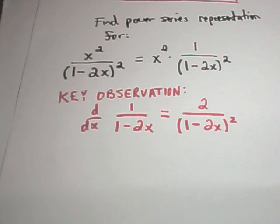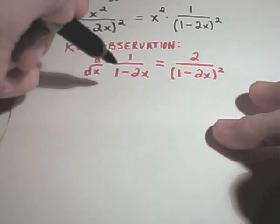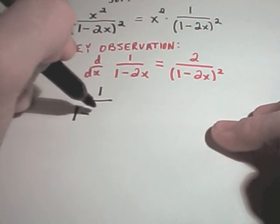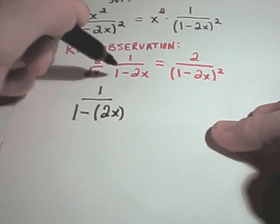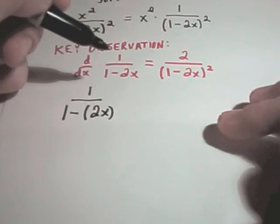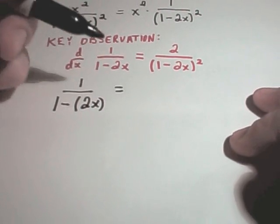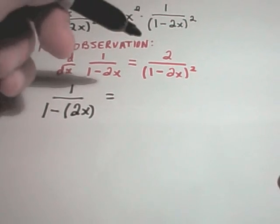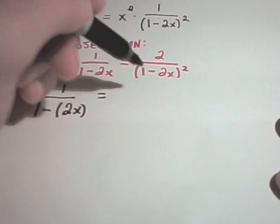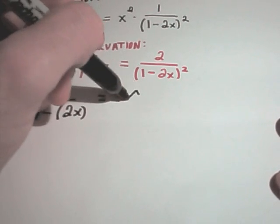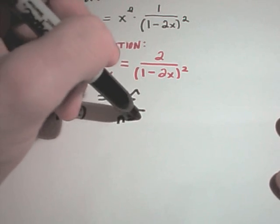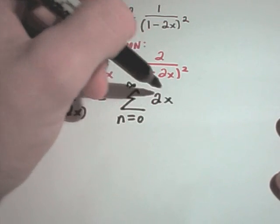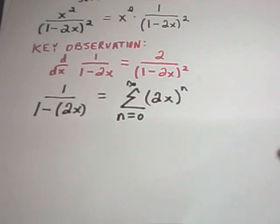Why is this the key observation? The reason is we know how to find a power series representation for 1 over 1 minus 2x. I did that in the other video on finding power series representations for functions. And this is just going to be from n equals 0 to infinity of 2x raised to the n power.